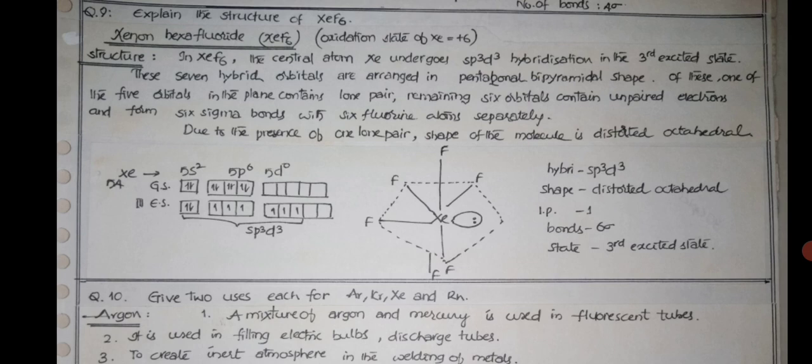Due to the presence of a lone pair, the shape of the molecule is distorted octahedral. You can see there. There are four in the plane, but the lone pair is there, so it is not octahedral but distorted octahedral. Sp3d3, one lone pair, six sigma bonds, third excited state.